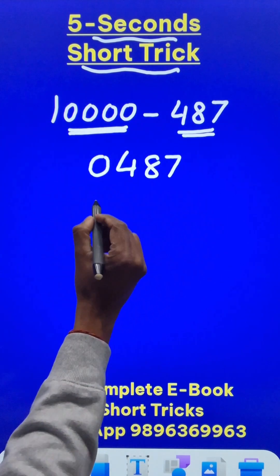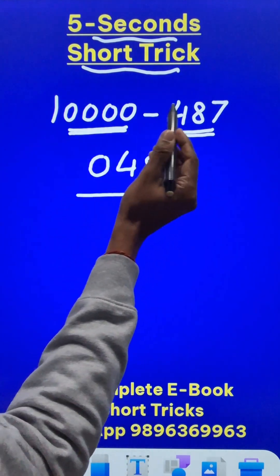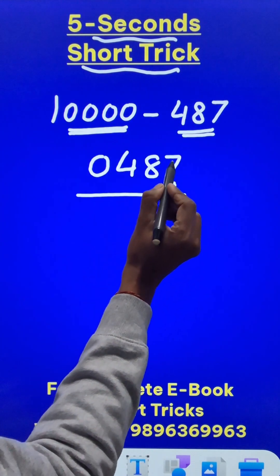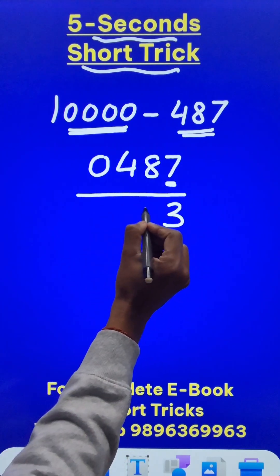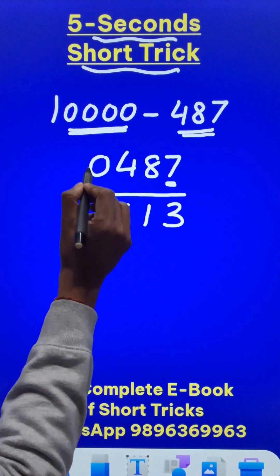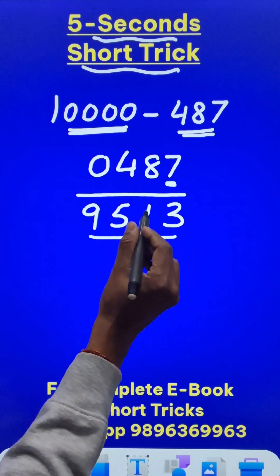And now you have to do a very simple thing to get you the final answer. Subtract the last digit from 10. So 10 minus 7 is 3 and all other digits you have to subtract from 9. 9 minus 8 is 1, 9 minus 4 is 5 and 9 minus 0 is 9 and here you have the answer.